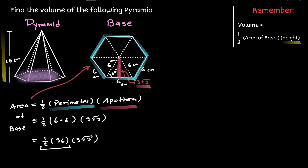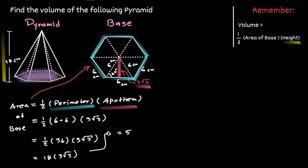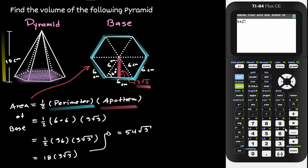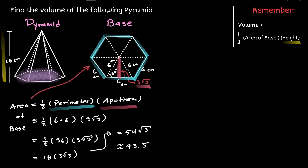Now we simplify: 36 times one half is 18. We are multiplying two expressions and there is a square root involved, so we multiply outsides with outsides and insides with insides. The outside numbers are 18 and 3, giving us 54. The square root of 3 carries on, so we have 54 times the square root of 3. Using a graphing calculator to approximate this value, the area of the base is approximately 93.53 centimeters squared.